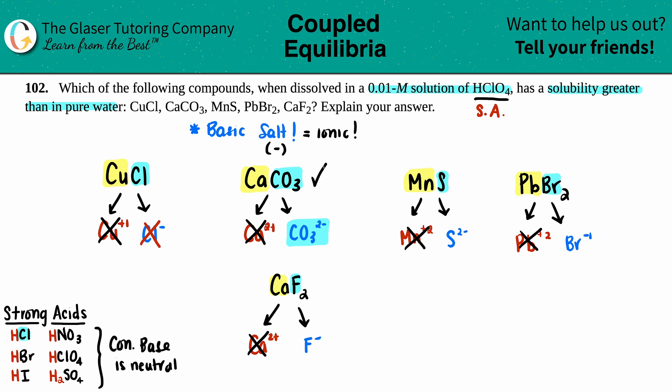Let's keep going. S 2-. Do I see S on my list of strong acids? No I don't. So this MnS is also another compound that makes the cut.